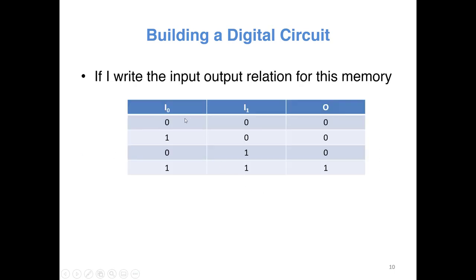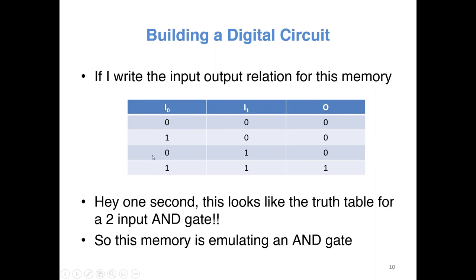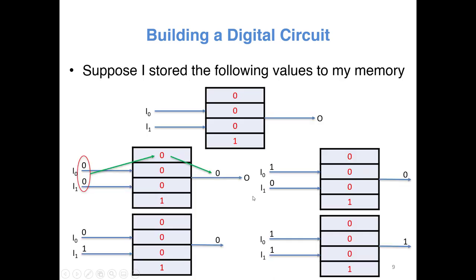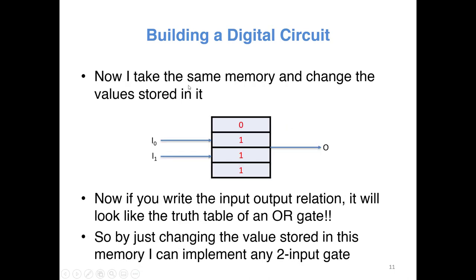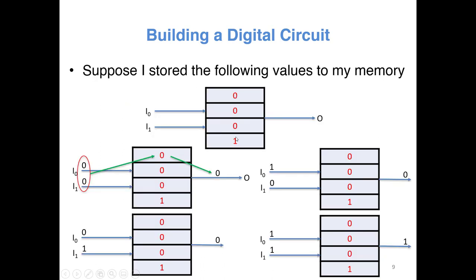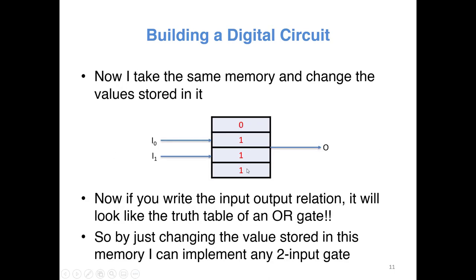If you write the relation between the input — the address bus — and the data bus, you get a table. If you closely examine it, you'll find this table is exactly the same as the truth table of an AND gate. So this memory is emulating an AND gate. If you take the same memory and change the data inside from 0001 to 0111, following the same steps you'll find this memory is now emulating an OR gate.